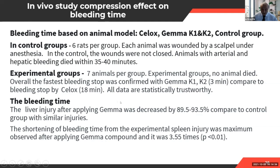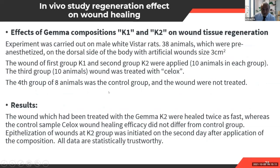All results are statistically validated. For larger blood-supply organs like the liver and spleen, after applying Gamma the injury bleeding was decreased by 89 to 92 percent compared to the control group. Bleeding time was significantly shortened for spleen injuries as well when treated with Gamma.